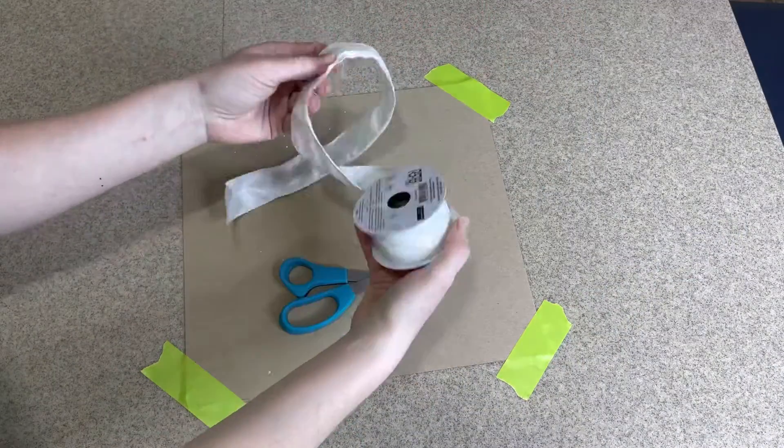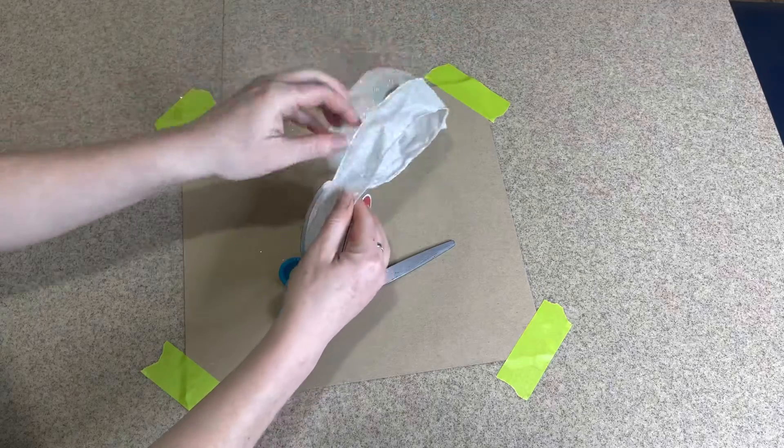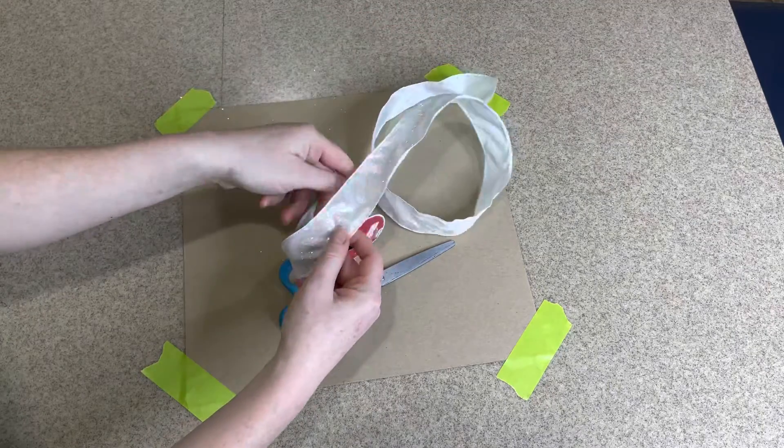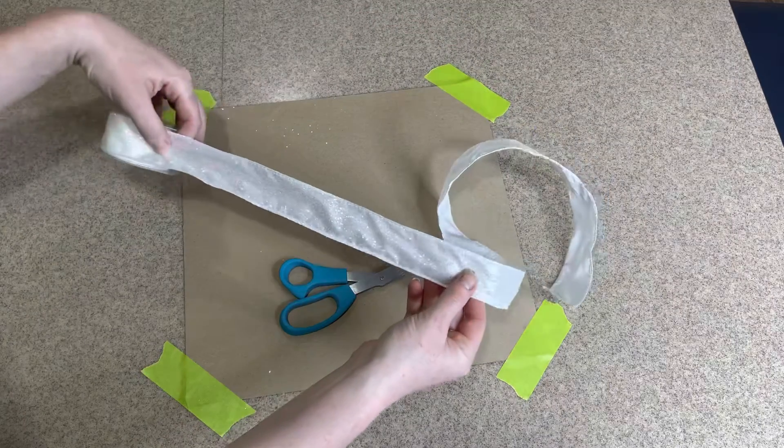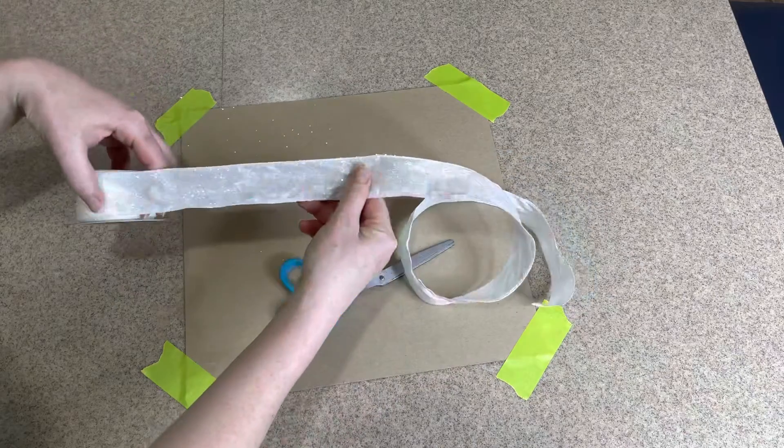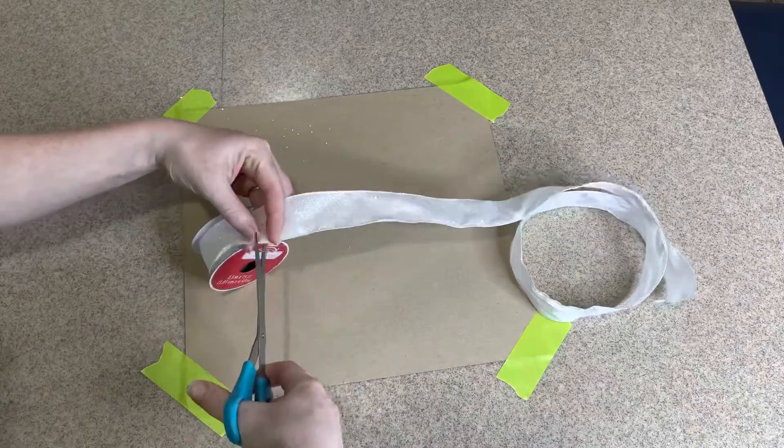You're going to take your spool of ribbon and pull off as much as you think you'll need to make a bow of what size and shape you'll have to determine. And you'll cut your ribbon once you find where you want it.